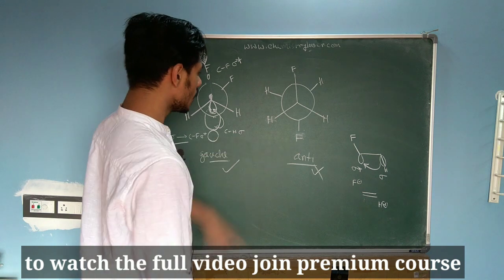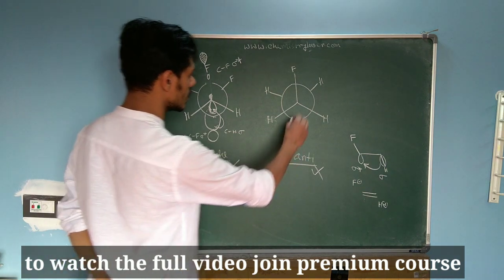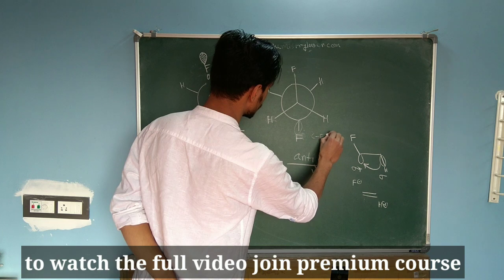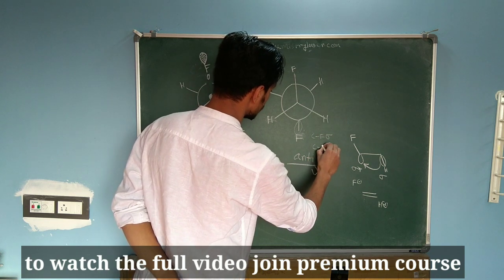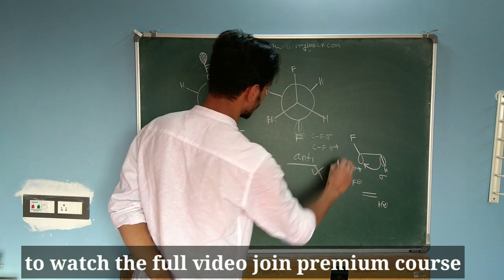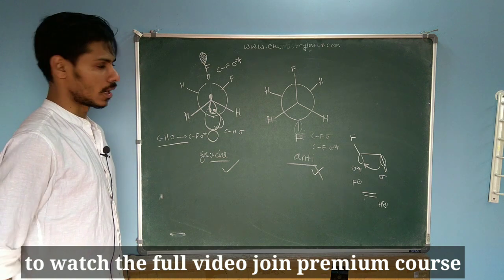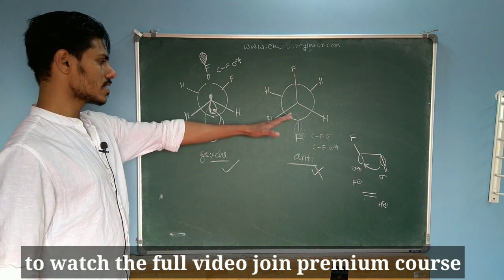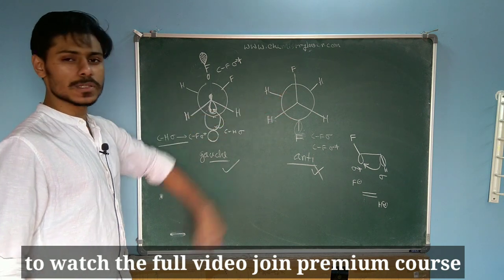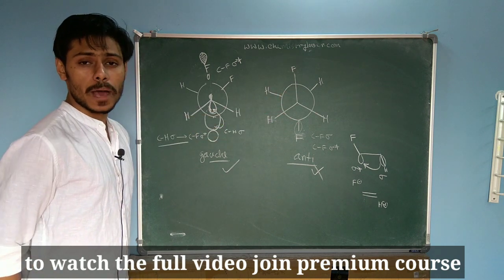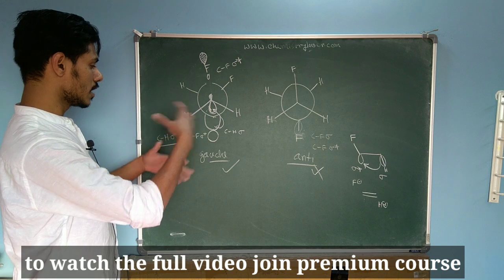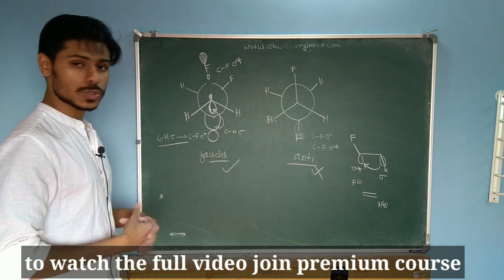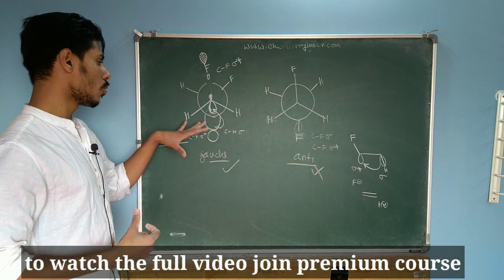This parallel alignment is present only in the gauche form. In the anti form, the CF sigma and CF sigma star are parallel to one another, but not the CH sigma and the CF sigma star. So in the anti form, the CH sigma and CF sigma star are not in perfect alignment for this sigma to sigma star donation, which is only possible in the gauche form — and that makes the gauche form stable.